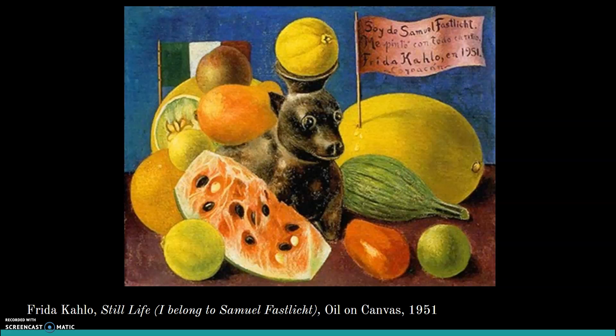The next artist is Frida Kahlo — you might recognize her as the lady with the unibrow and all the flowers. This is one of her few still lives, called 'I Belong to Samuel Fastly,' who was actually her dentist. She painted this still life as payment for dental work — a cool way to pay your dentist if you don't have dental insurance! It was painted in 1951 and features a lot of local fruits from Mexico, where Frida Kahlo was from. She was very proud of her Mexican heritage and often dressed in traditional Mexican clothing.